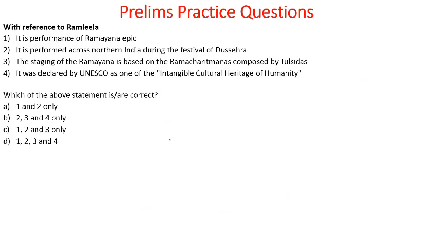Now let's look at some prelims practice questions. With reference to Ramlila: it is a performance of the Ramayana epic; it is performed across northern India during the festival of Dussehra; the staging is based on Ramacharita Manas composed by Tulsidas; and it was declared by UNESCO as an intangible cultural heritage of humanity. Which statements are correct? The answer is all — 1, 2, 3, and 4.